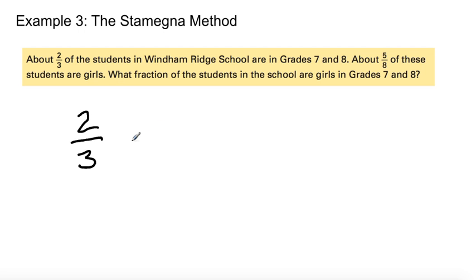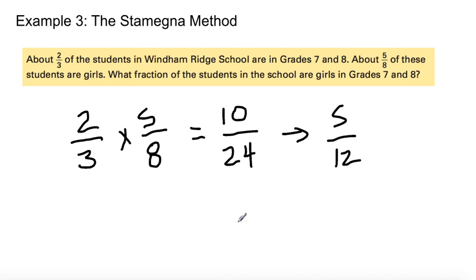So two-thirds of five-eighths or five-eighths of two-thirds, multiply it across. Two times five is ten, three times eight is twenty-four. Can we continue? Can we make this smaller? Can we simplify this? Yeah we can, 5/12. So what fraction of the students in the school are girls in grades seven and eight? The answer is five-twelfth.